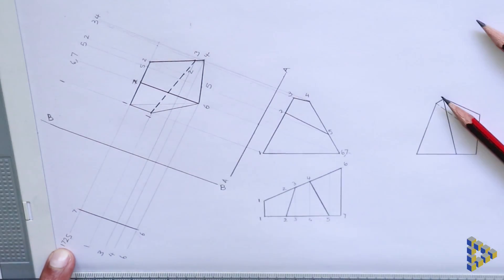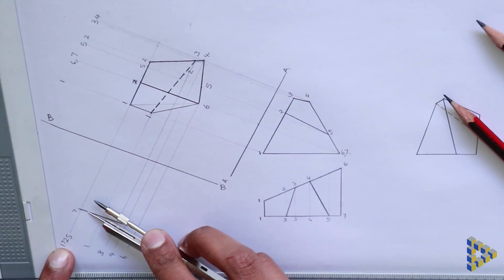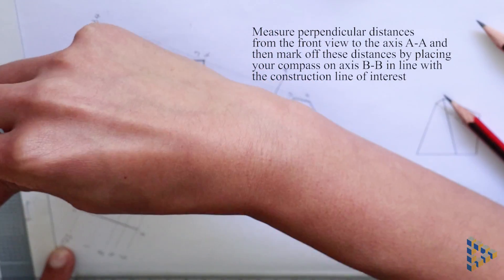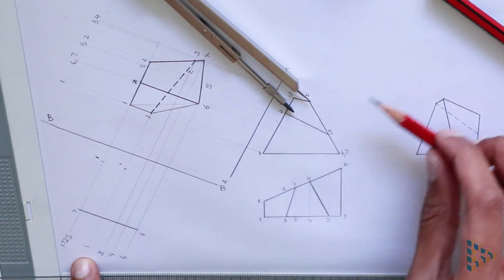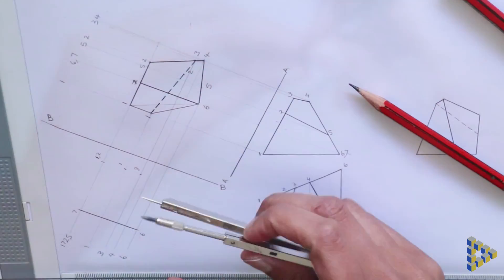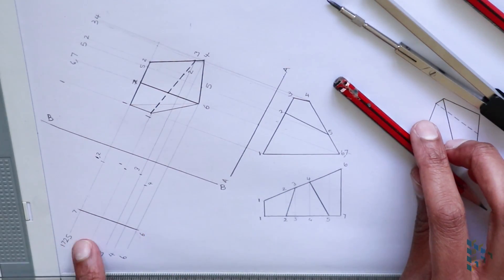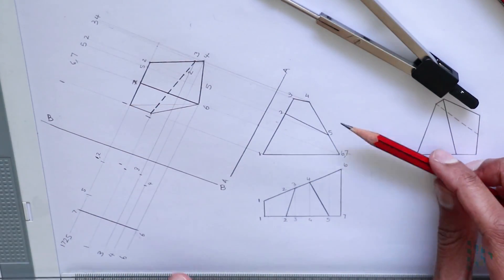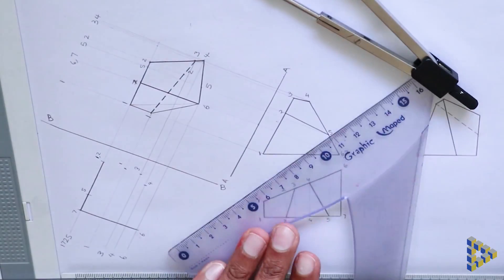Measure off perpendicular distances for the rest of the points and mark it off on your secondary auxiliary drawing. Now, one, two, five, seven are connected and therefore straight line can be drawn to join these points.